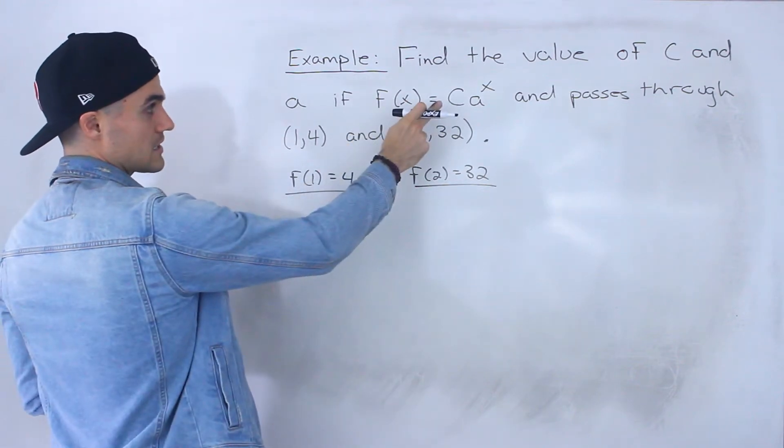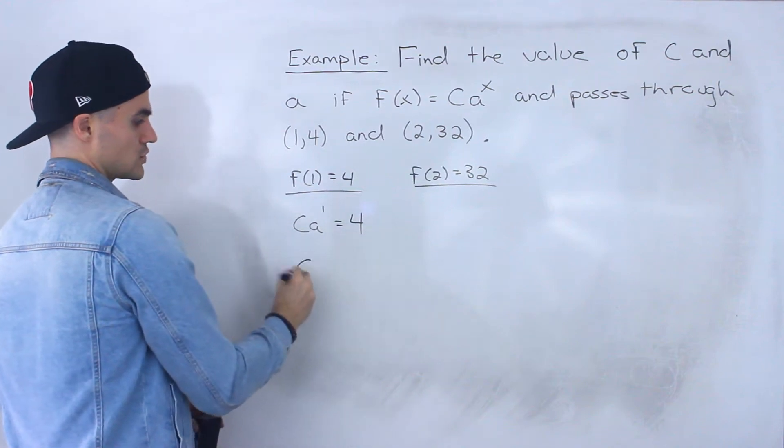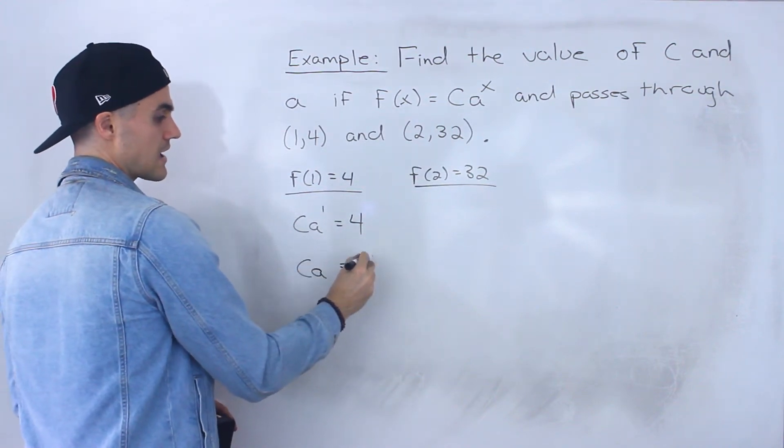So if we plug in 1 for x here, we would have c a to the power of 1 equals 4, which if we simplify, is just c a equals 4.